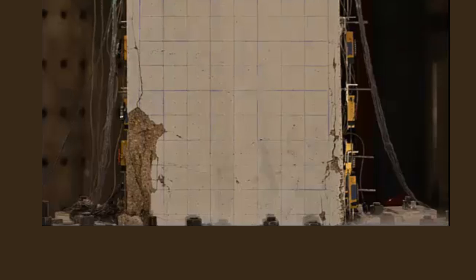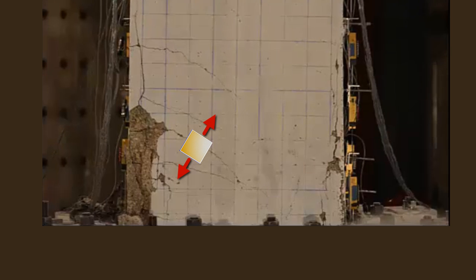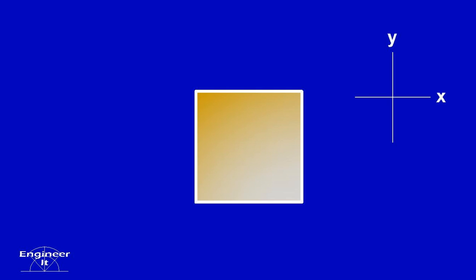For example, this concrete column being stressed beyond its intended use shows that maximum stresses may be at an angle. This square represents a differential element rotated to the standard x-y coordinate system.